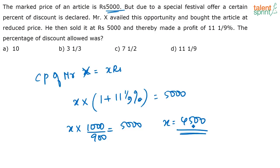An article which cost Rs 5,000, he bought it for Rs 4,500 and he sold it for Rs 5,000. By doing that, he made a profit of 11 1/9 percentage. So the question is, what percentage discount was Mr. X given? An article which cost Rs 5,000, he got it for Rs 500 less.